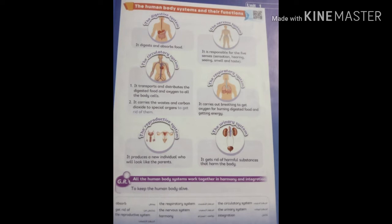The nervous system gives us the ability to feel, see, hear, smell, and taste. The reproductive system produces new individuals who look like us.